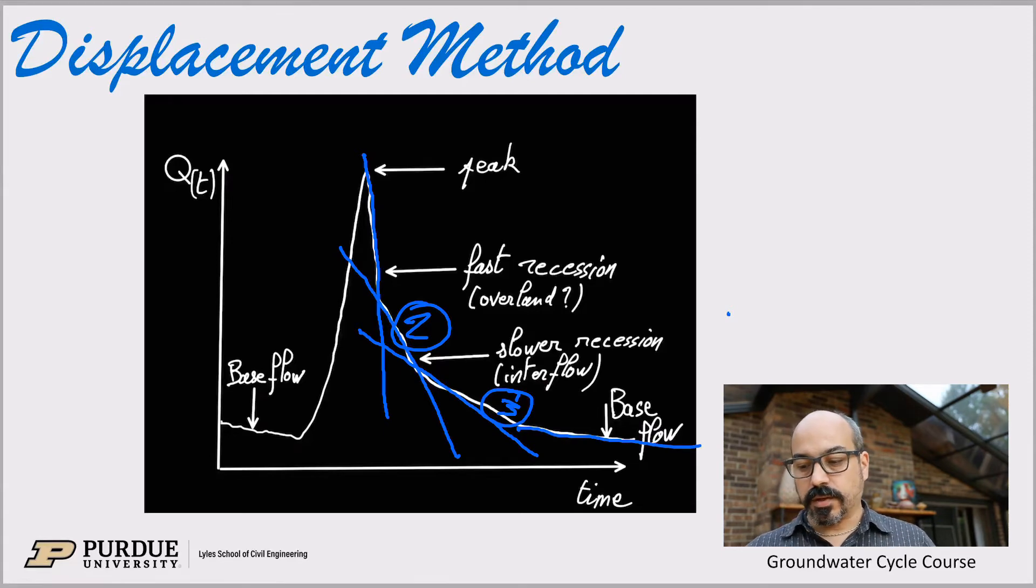So again, you can sort of link these different periods to physical processes or flow processes on the landscape. So over land, inter flow, and then the return to base flow.